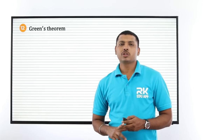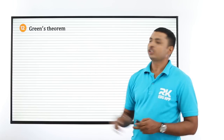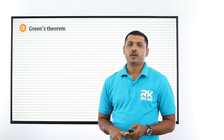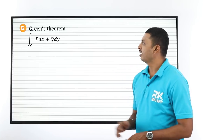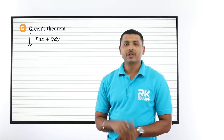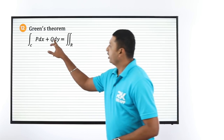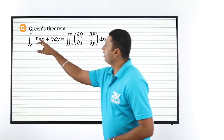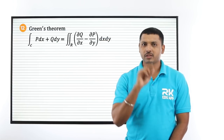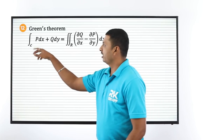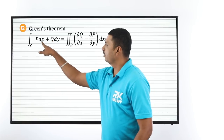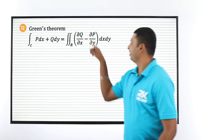For vector integration, we have Green's theorem, Stoke's theorem, and Divergence theorem. Green's theorem formula: ∮ (P dx + Q dy) = ∬ (del Q/del x − del P/del y) dx dy.